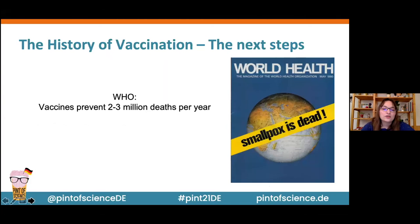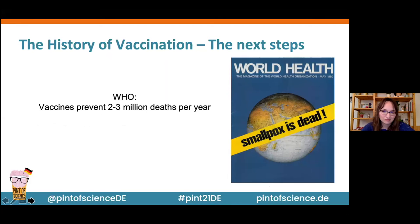With all of these amazing vaccines on the market, the WHO estimates that vaccines currently prevent between two and three million deaths per year — and that was an estimate made before the coronavirus pandemic, so it may be even more now. Hopefully most of the planet has had access to vaccines.